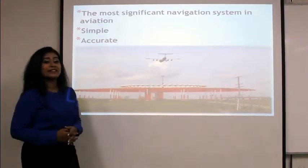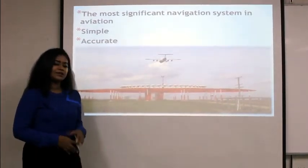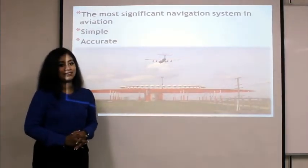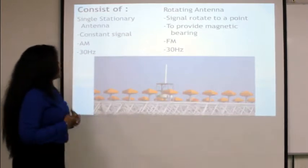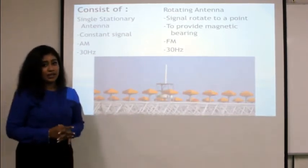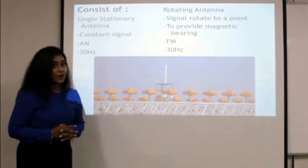VOR is the most significant navigation system. It is simple and produces accurate location to the pilots. VOR consists of two types of antenna: the constant antenna and the rotating antenna.